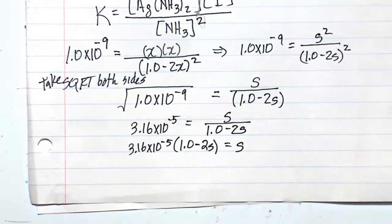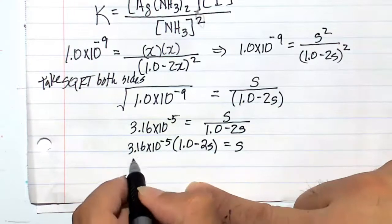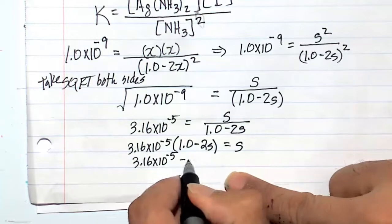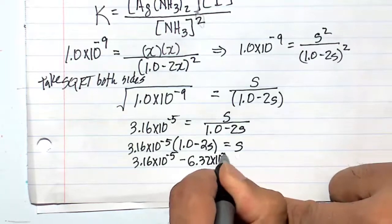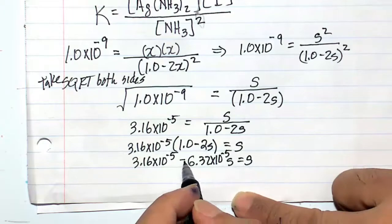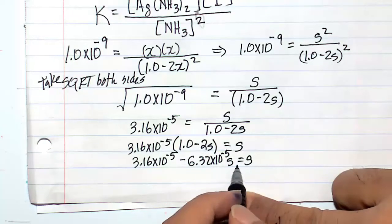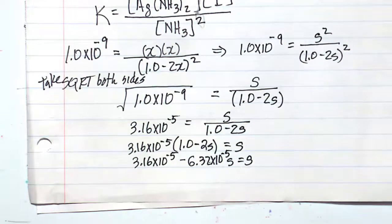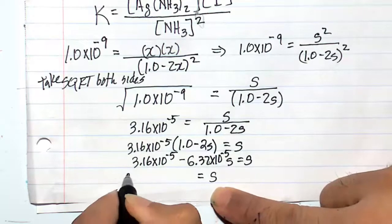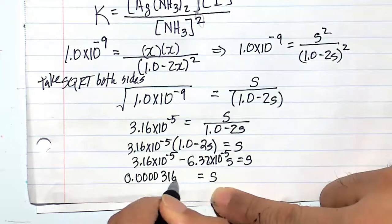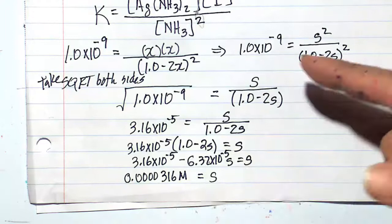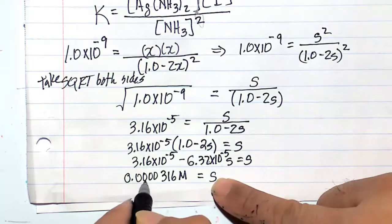We use the distributive property to distribute 3.16 times 10 to the minus 5 across (1 minus 2s), giving 3.16 times 10 to the minus 5 minus 6.32 times 10 to the minus 5 times s, which equals s. Isolating s: since 6.32 times 10 to the minus 5 is negligible compared to s, we get s equals 3.16 times 10 to the minus 5 molar. So that's the correct answer for the solubility of Ag⁺ in ammonia.